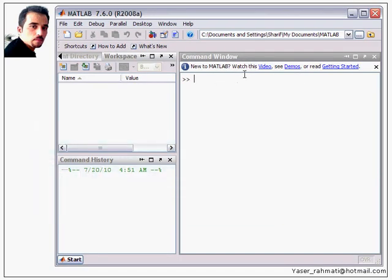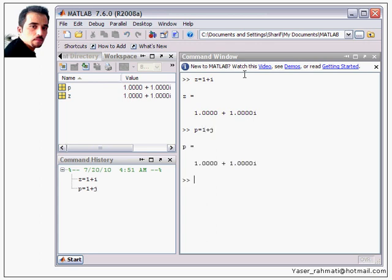Let's show you that operation in MATLAB environment. Z equal 1 plus I. Instead of typing I, again, type 1 plus J. As you can see, here this is the Z and this is the P as our desired complex number. Both of them are same and equal.